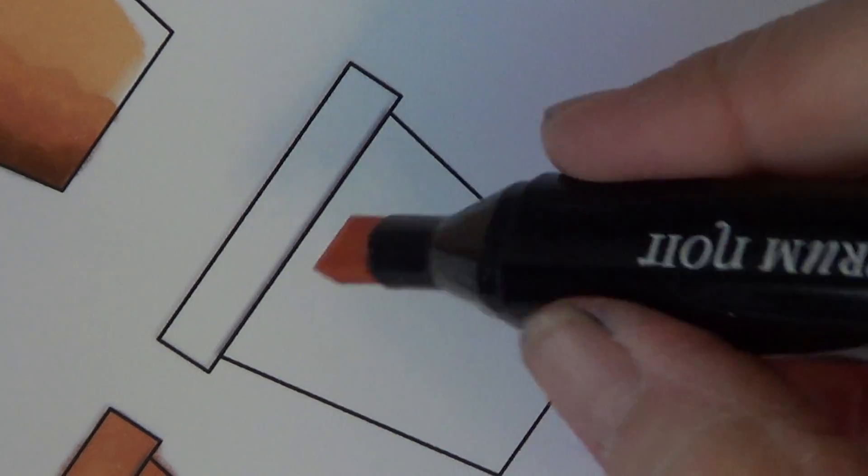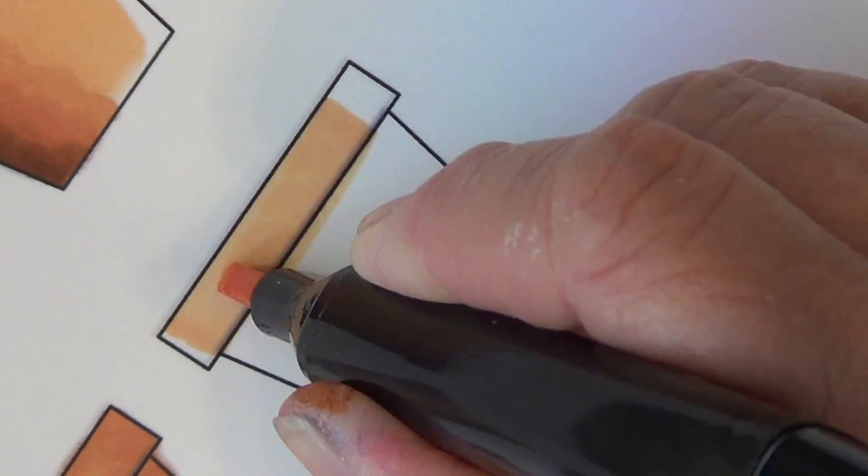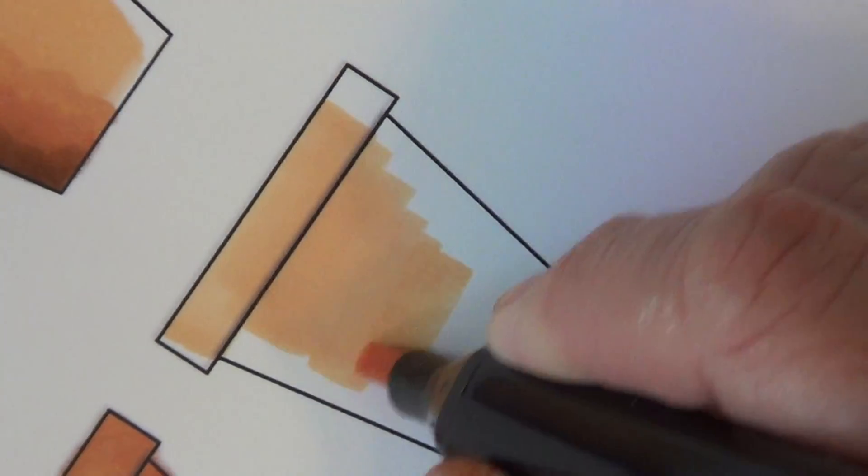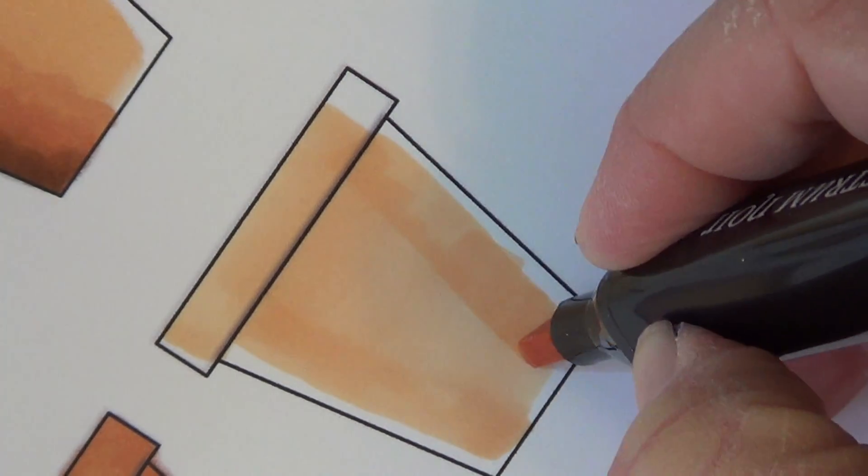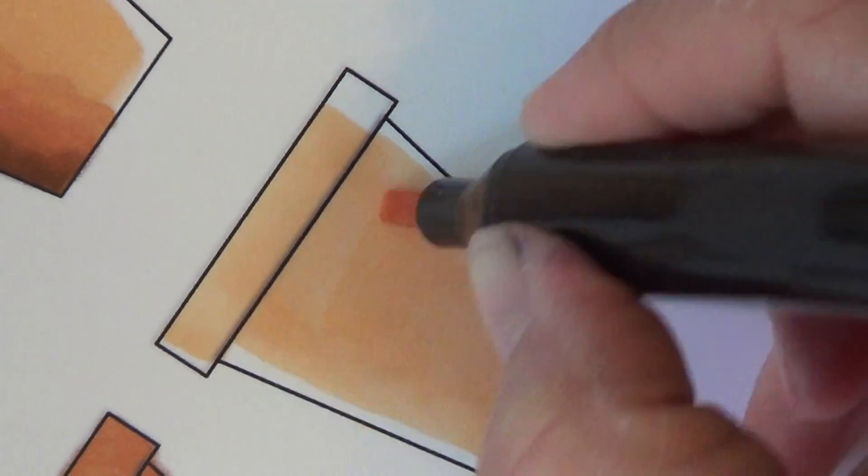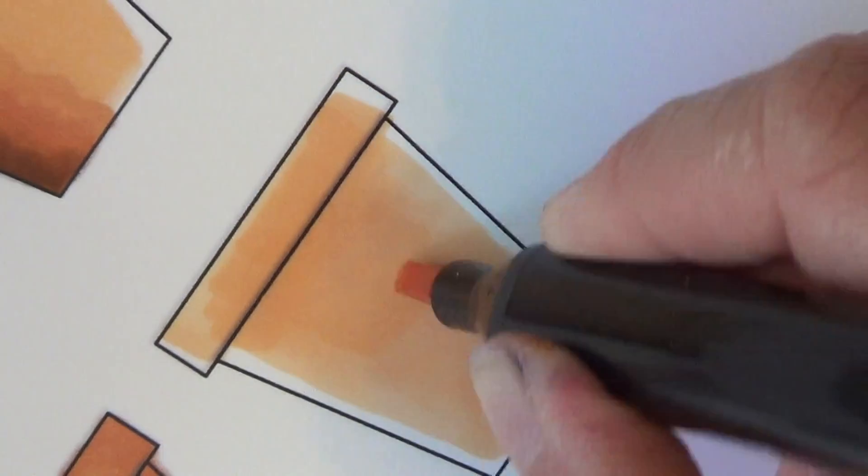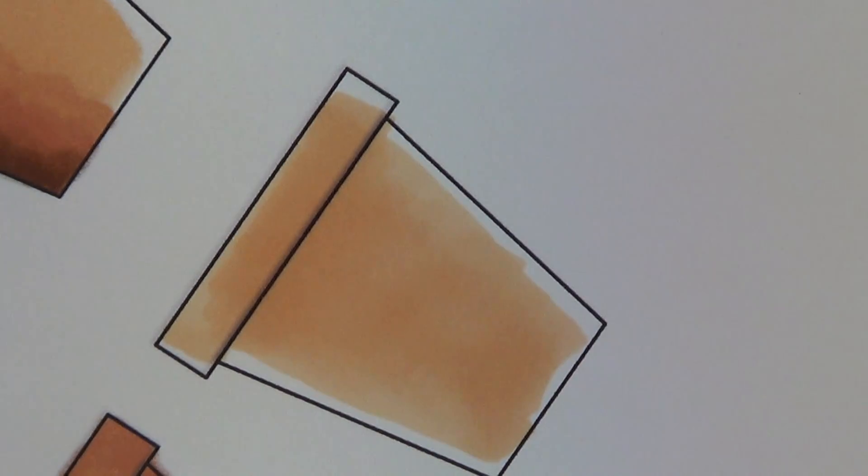I'm going to start off with my lightest color first, just wetting the surface to give me a little bit of fluid to blend my colors together a little bit smoother. I'm not going all the way up to the line. I'm just adding some fluid. You can skip this step if you prefer, but I like to add in a little bit of my lightest color first.